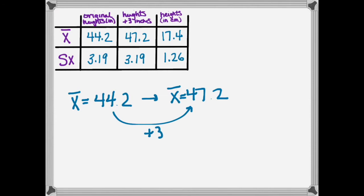That's the same thing that happened to each value in the list. When I'm transforming a list by adding or subtracting the same value to each number in the list, then I can change the mean by that same value. In this case we added three, so we're going to add three to our mean.